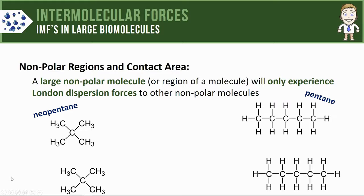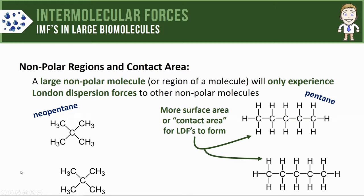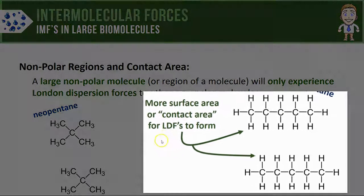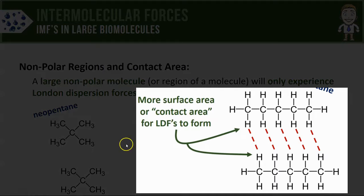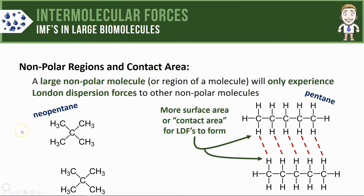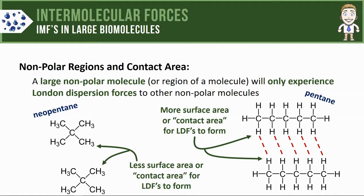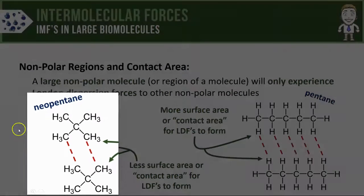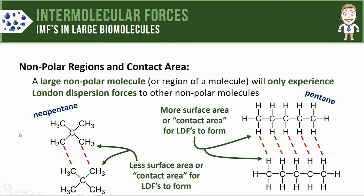You'll notice the two pentane molecules are longer and straighter, which allows them to line up next to each other with more contact area — also called more surface area. More surface area means more chances for London dispersion forces to form, shown here with red dashed lines. The neopentane molecules, by contrast, are much more compact, giving them less surface area and fewer opportunities for London dispersion forces to form.